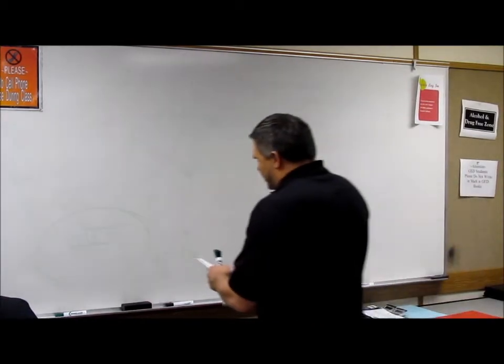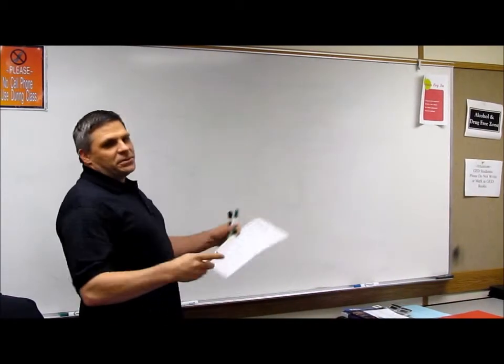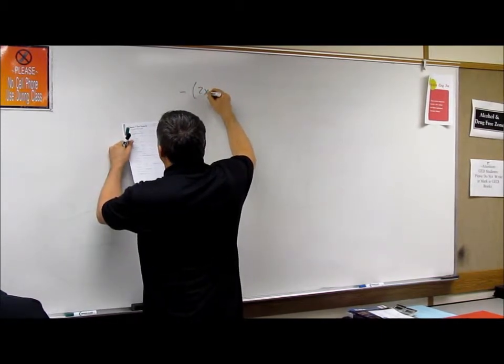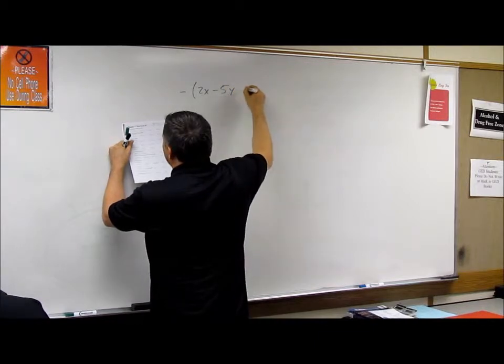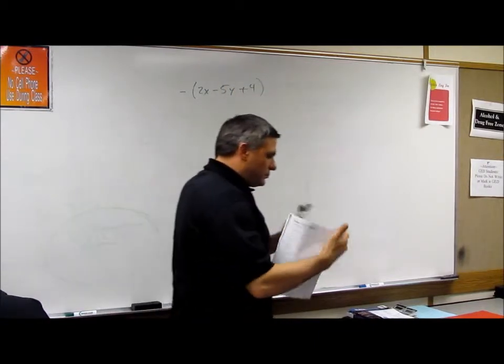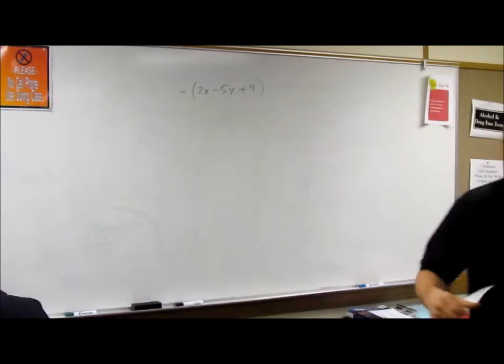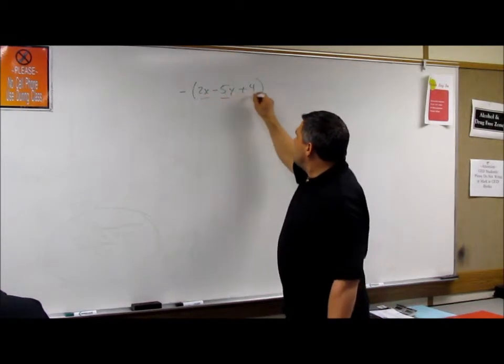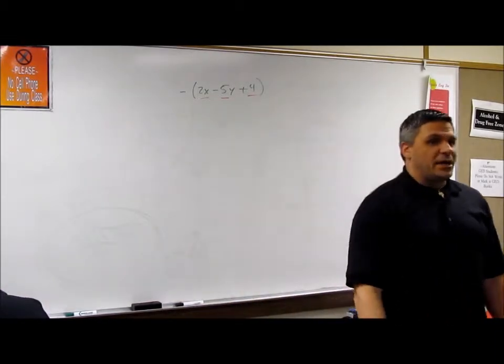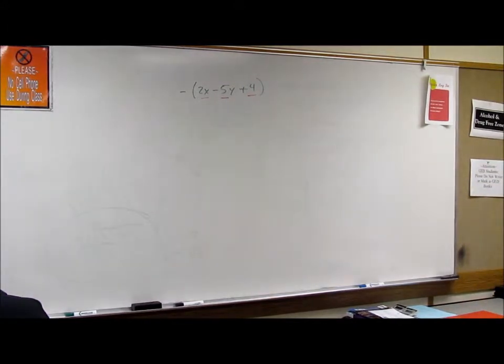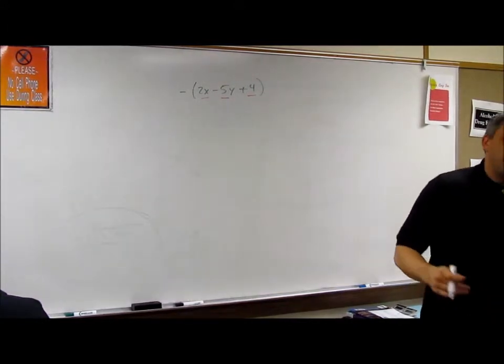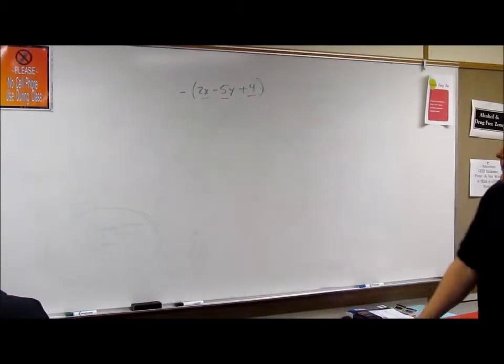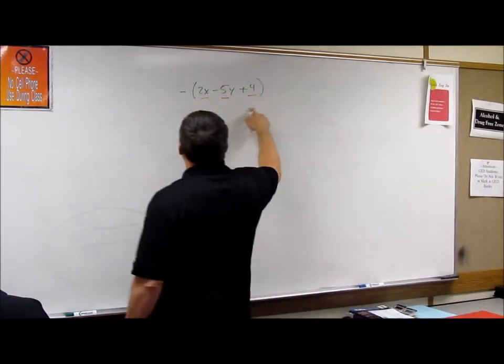So let's do another one that's very similar. You've got negative 2x minus 5y plus 4. Now you're looking at it and you say, well, how many houses do I got? I've got 1, 2, 3. Three houses. This is a polynomial. And what kind of polynomial is that with 3? It's got 3, so it's a trinomial.